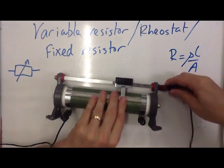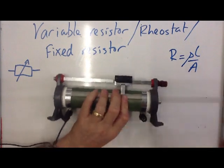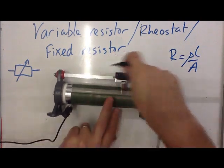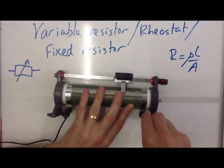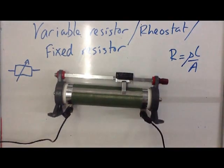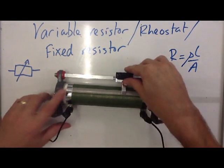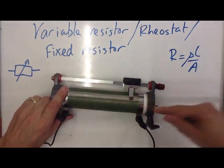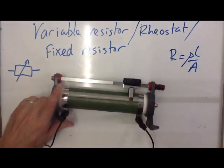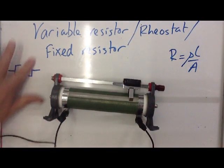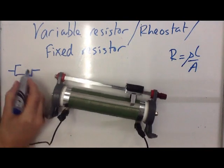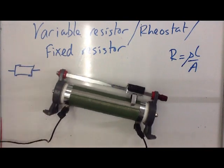If I want to use it as a fixed resistor, I need to make the current go through all the wire all the way. I ignore this top rail entirely and just plug it in at the bottom. That's a fixed resistor — now it doesn't matter what I do with the dial, all the current goes all the way from one end to the other. We'd remove the arrow from the symbol, and it would look like that.